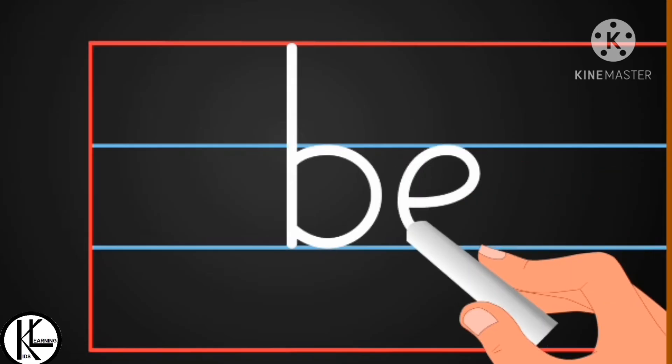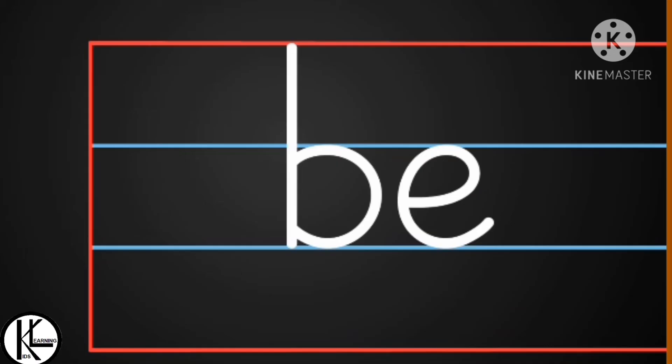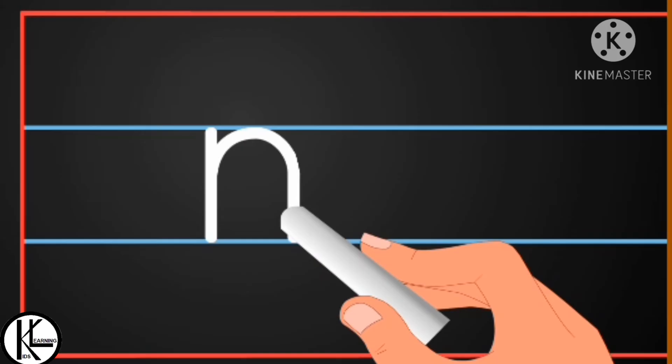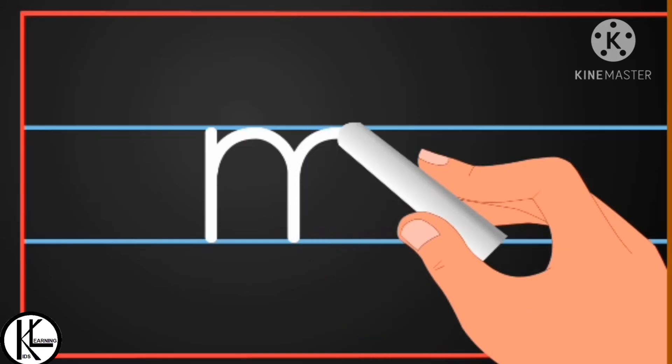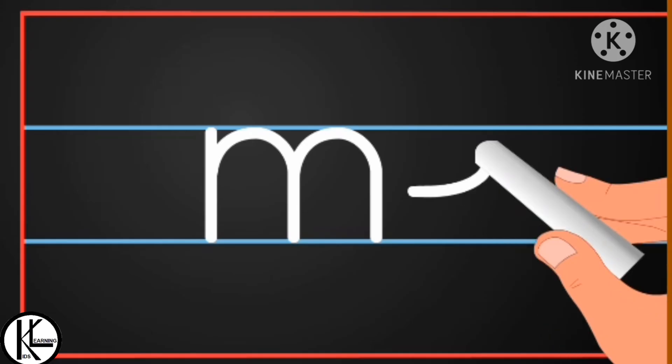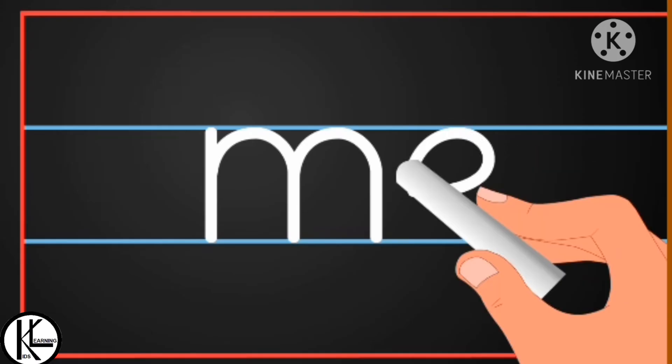While reading, write it children: be. Come on children, now we will write letter m. Write letter m: M, E, Me. Write while reading: letter M and then letter E. M, E, Me.